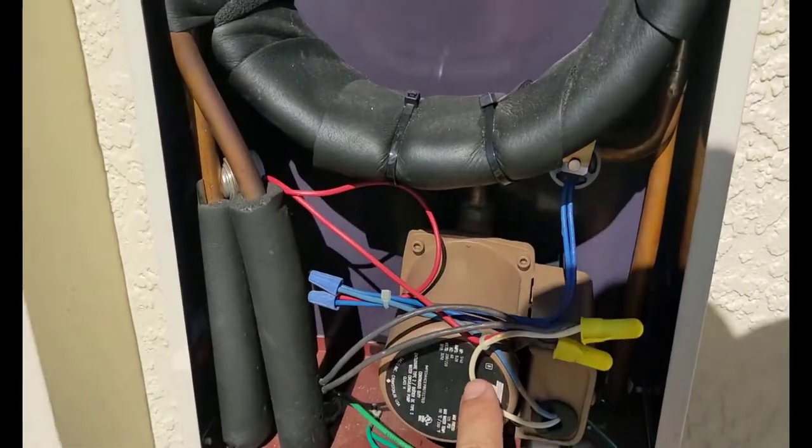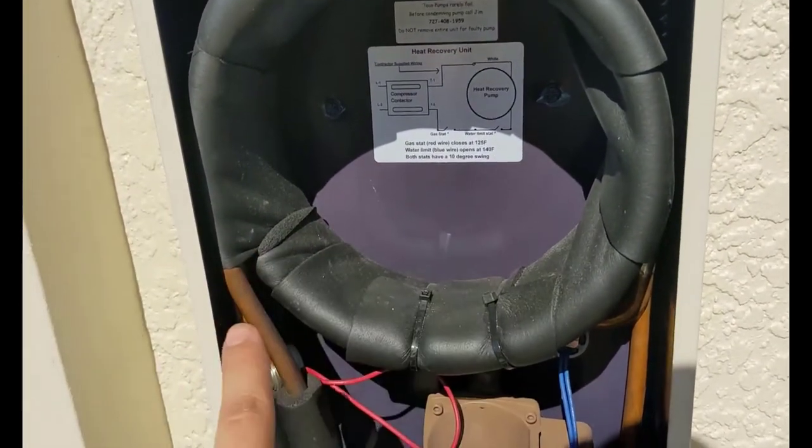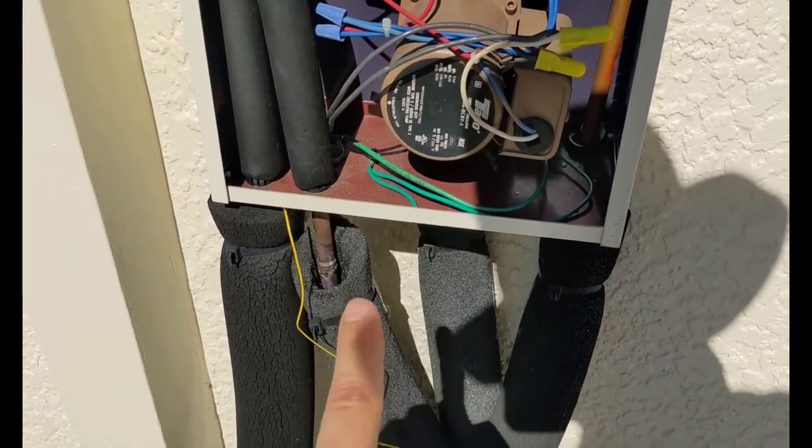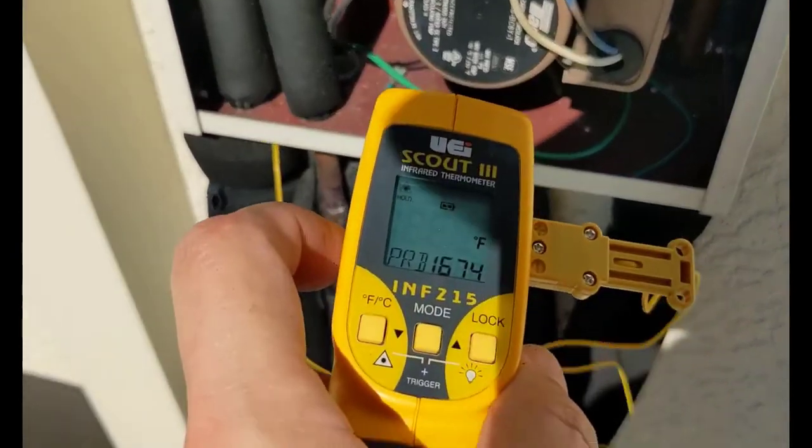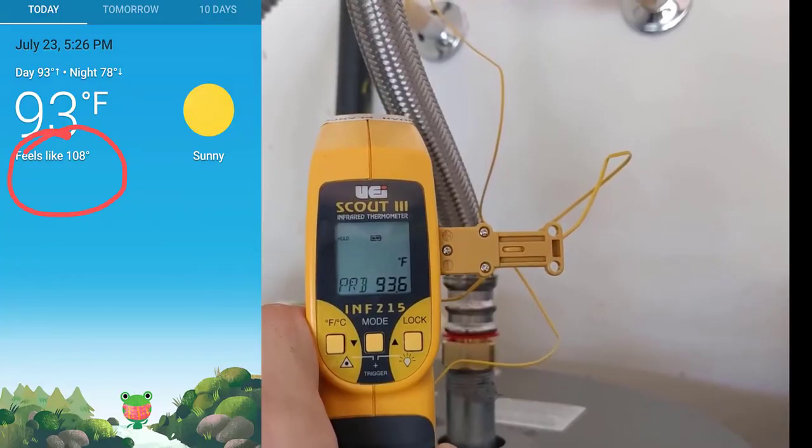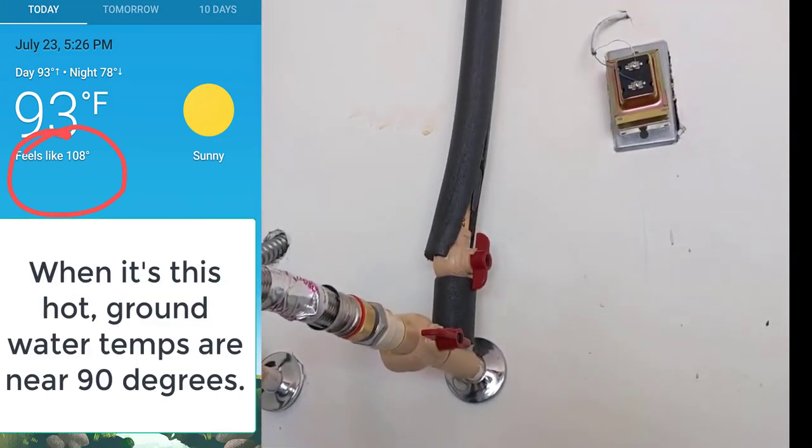So the heat is essentially being exchanged from the hot liquid line into the cold water which is then circulated with this circulation pump through this heat exchanger. So the cold water is being brought in here from the water heater tank and then returned to the water heater tank at a much hotter temperature.